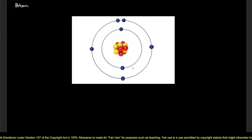The atom consists of three subatomic particles. These subatomic particles are neutrons, protons, and electrons.